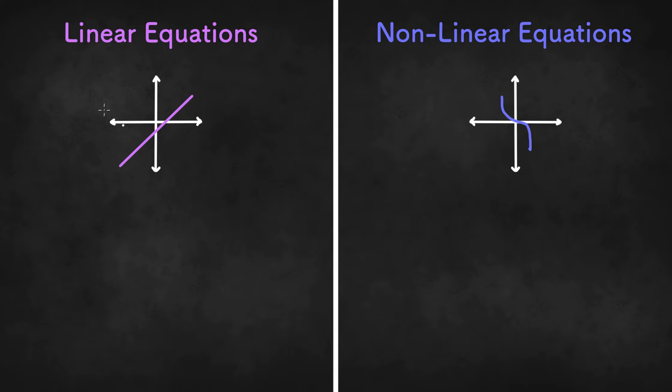So linear equations might be something like y equals 2x minus 3, or it could look something like 5x minus 7y equals negative 35, or maybe even something like y minus 5 equals one half times x plus 4.